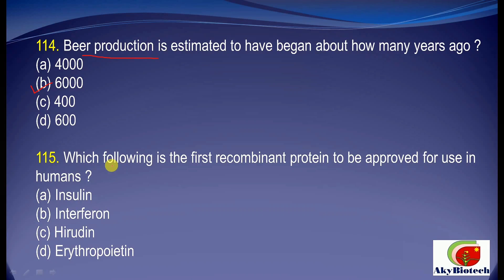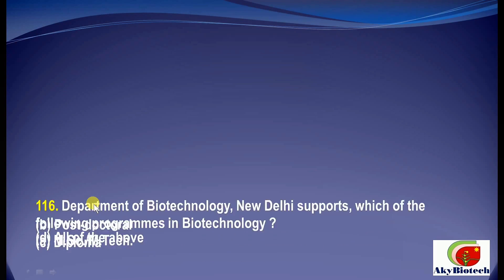Question 15: Which of the following is the first recombinant protein to be approved for use in humans? The correct option is insulin. Question 16: The Department of Biotechnology, DBT, New Delhi supports which of the following programs in biotechnology? The correct option is D — all of the above. It supports MSc, MTech, postdoctoral, and diploma programs.